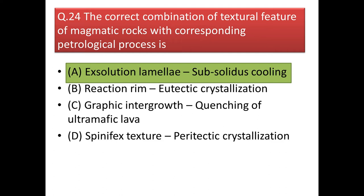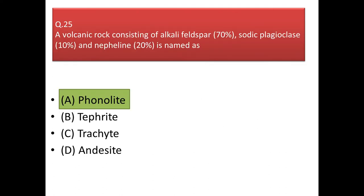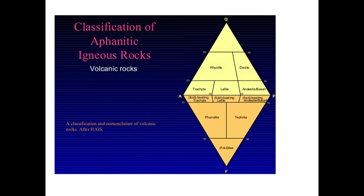Spinifex structure due to peritectic crystallization is also not possible, because in spinifex texture we get long acicular phenocrysts of olivine or pyroxene giving the rock a bladed appearance on a weathered surface. Next question: a volcanic rock consisting of alkali feldspar 70%, sodic plagioclase 10%, and nepheline 20% is named as? Looking at the QAPF diagram, if a rock contains alkali feldspar 70% and sodic plagioclase 10%, and nepheline 20%, it comes under phonolite.